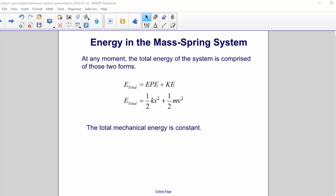At any moment, the total energy of the system is comprised of those two forms. E total equals elastic potential energy plus kinetic energy, or 1 half kx squared plus 1 half mv squared. The total mechanical energy is constant. It simply changes forms.